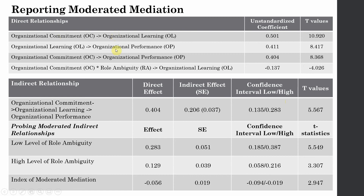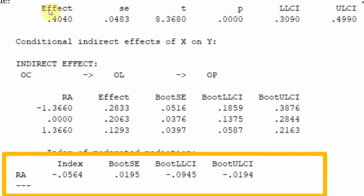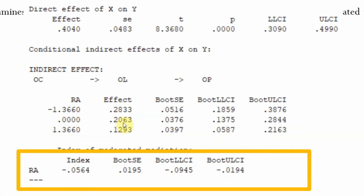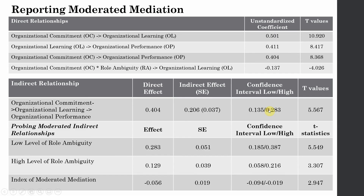When reporting, first report your direct relationship from organizational commitment to the mediator using the unstandardized coefficient and T value from the output summary for each outcome variable — OL and OP. Then report the indirect relationship: the direct effect of X on Y is 0.404, and the indirect effect is 0.206 at average level of role ambiguity. Also report low and high level indirect effects, confidence intervals, T values obtained by dividing the effect by the standard error, and the index of moderated mediation.